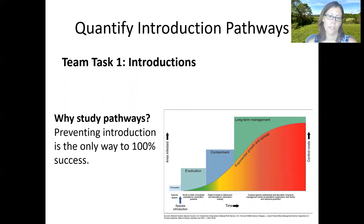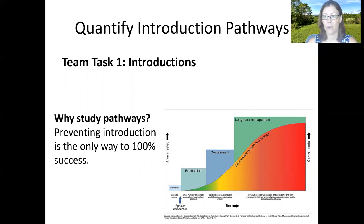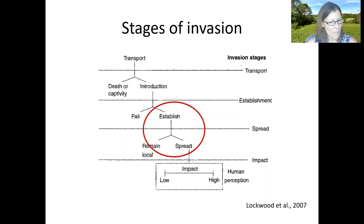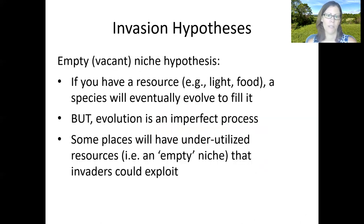The first team task in the class focuses on introduction pathways, because prevention is the best and the only 100% successful way to stop an invasive species — you stop it before it gets here. Next, we'll talk about the establishment and spread phases of invasion: why are invasive species actually able to become invasive? We'll discuss a number of different invasion hypotheses. One is the empty niche hypothesis.